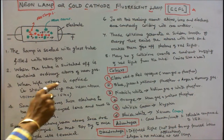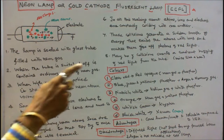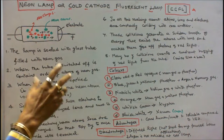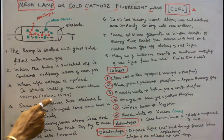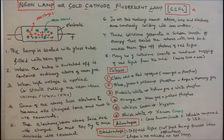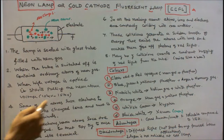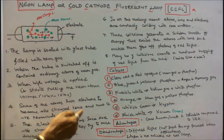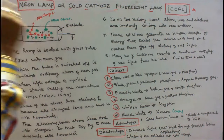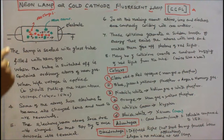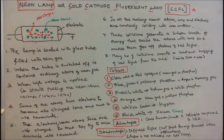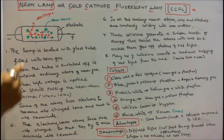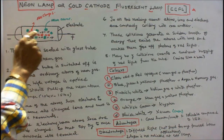When high voltage is applied using a step-up transformer, it starts pulling the neon atoms. The voltage is between 10 kV to 15 kV. Some of the atoms lose electrons to become positively charged ions, shown in red. These positively charged ions try to move to the negative terminal. The electrons the neon atoms lose are negatively charged, shown as black dots, and they try to move towards the positive terminal.